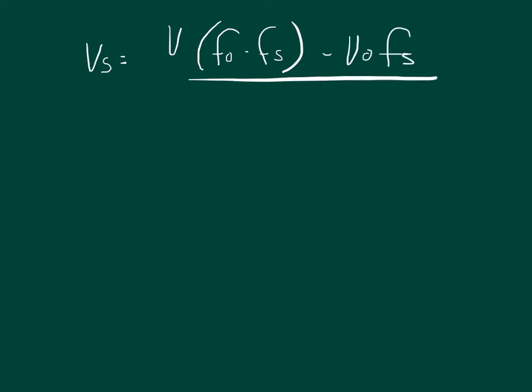The first way is we can solve for the velocity of the source using the Doppler equation. So the velocity of the source is equal to the velocity that sound travels through the medium times the frequency of the observer minus the frequency of the source minus the velocity of the observer times the frequency of the source, all of that divided by the frequency of the observer.